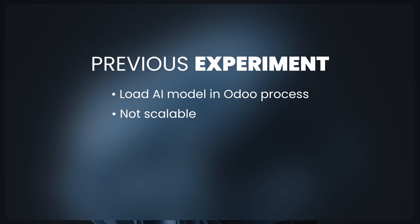By loading the AI model directly into Odoo, the memory requirement to run Odoo increases as well. To address this scalability issue we're going to separate the AI by using a separate server. Additionally, in the last experiment we only queried data from two data sources. In this experiment we're going to try a technique called Retrieval Augmented Generation, or RAG.